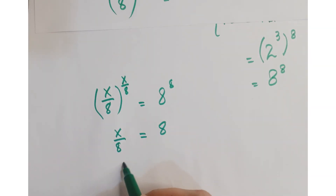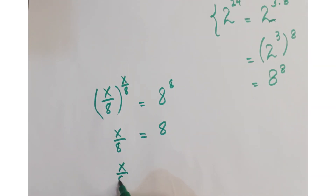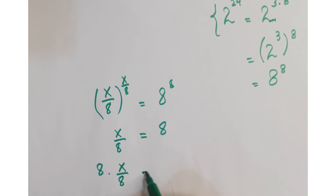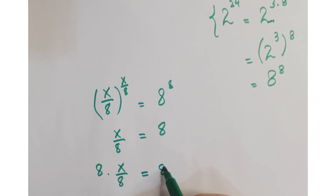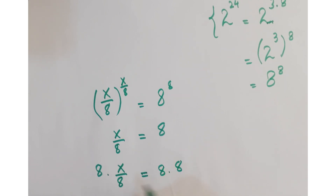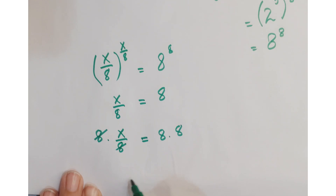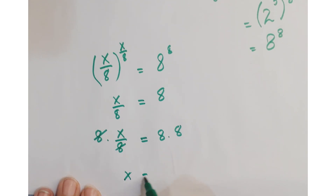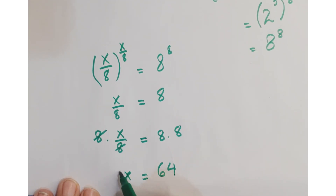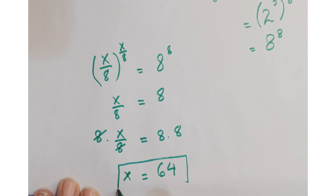Further, to evaluate x, just multiply by 8 on both sides. This 8 and this 8 get cancelled, so we get x is equal to 64, and this is our required answer.